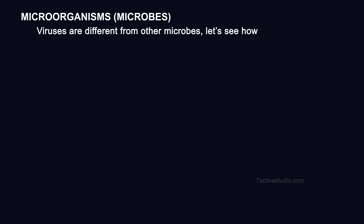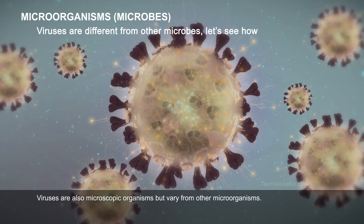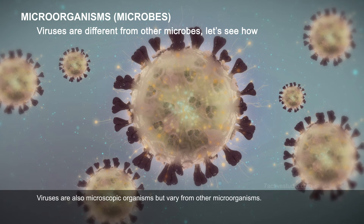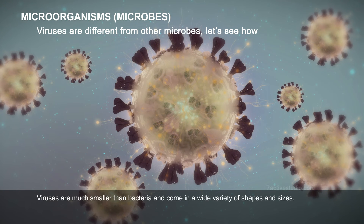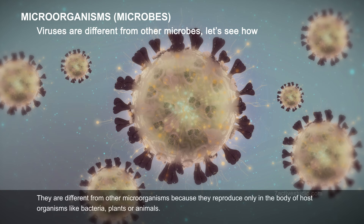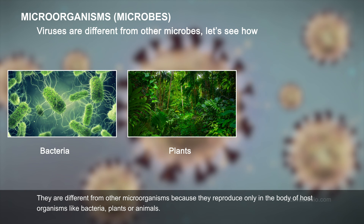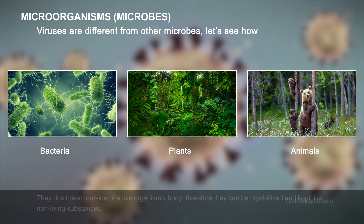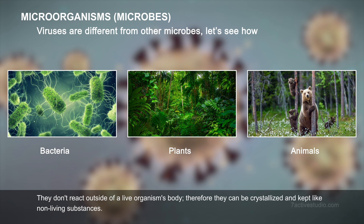Viruses are different from other microbes. Viruses are much smaller than bacteria and come in a wide variety of shapes and sizes. They are different from other organisms because they reproduce only in the body of host organisms like bacteria, plants, or animals. They don't react outside of a live organism's body. Therefore, they can be crystallized and kept like non-living substances.